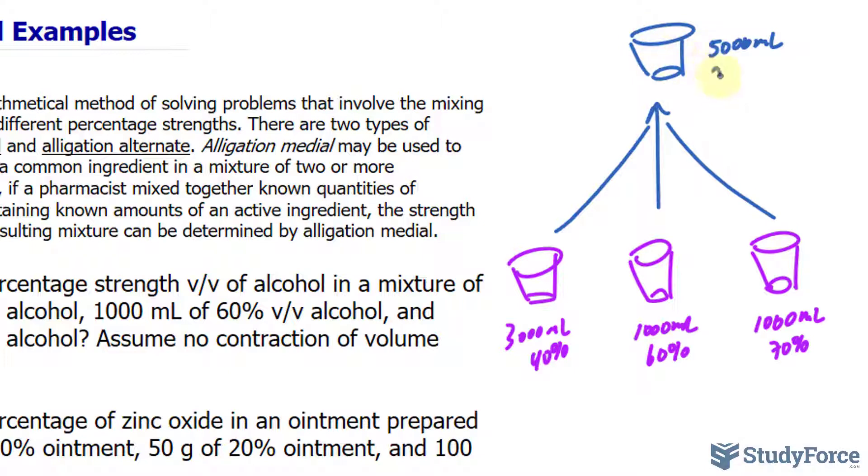But we don't know the concentration of alcohol in this resulting container containing these three different concentrations coming into one. To find out the concentration, which I'll denote as C, you find out the amount of active ingredient, which in this case is alcohol, in each of these containers. Sum them up and the sum should equal the amount of active ingredient of this container. Now in case that's confusing to you, here's what I mean.